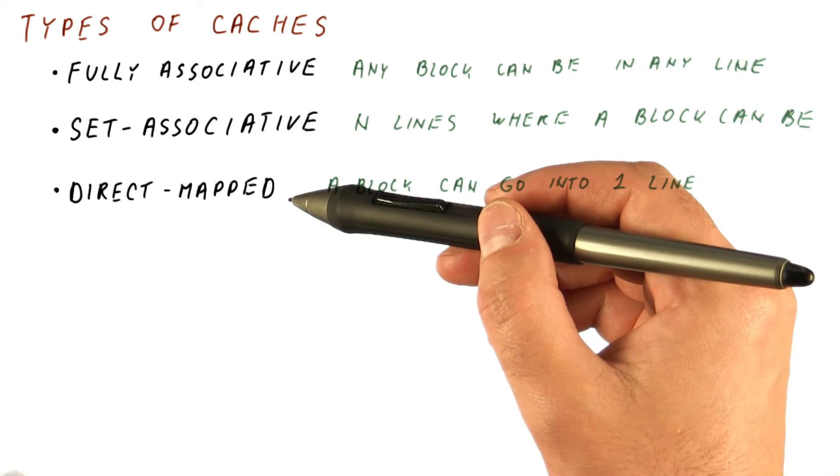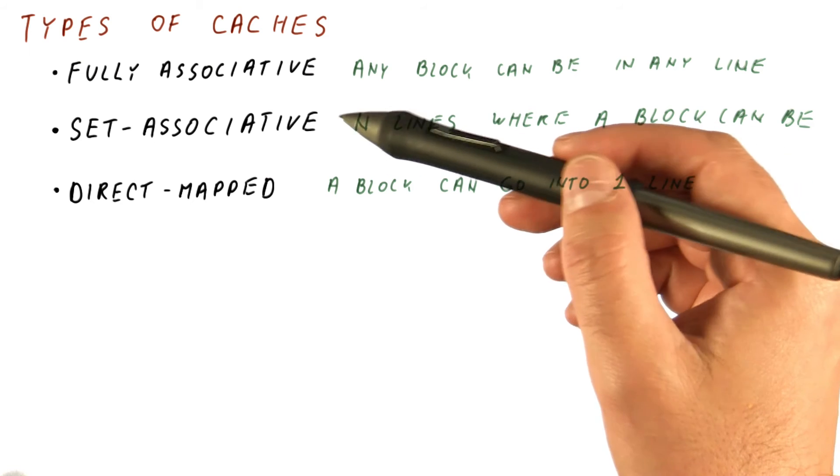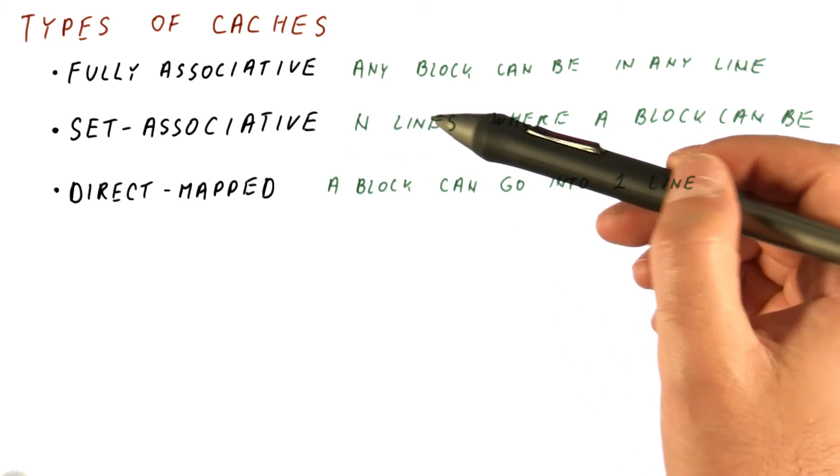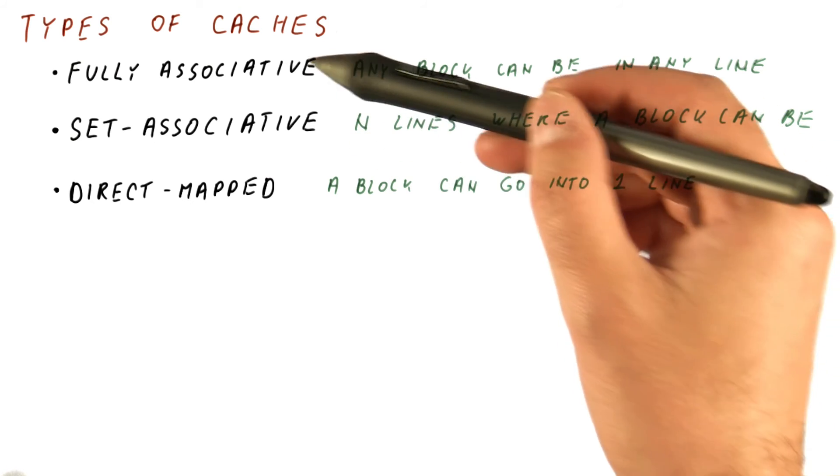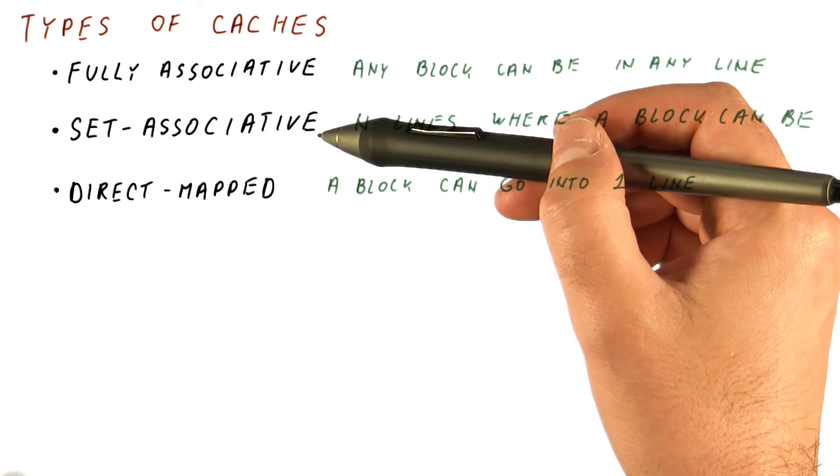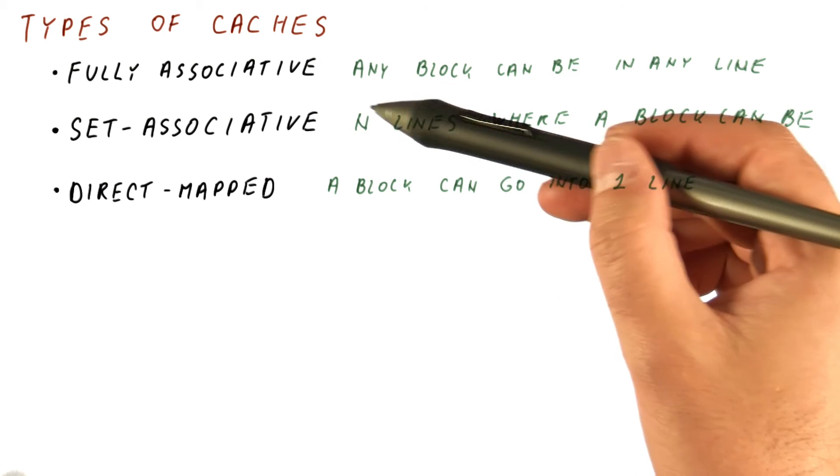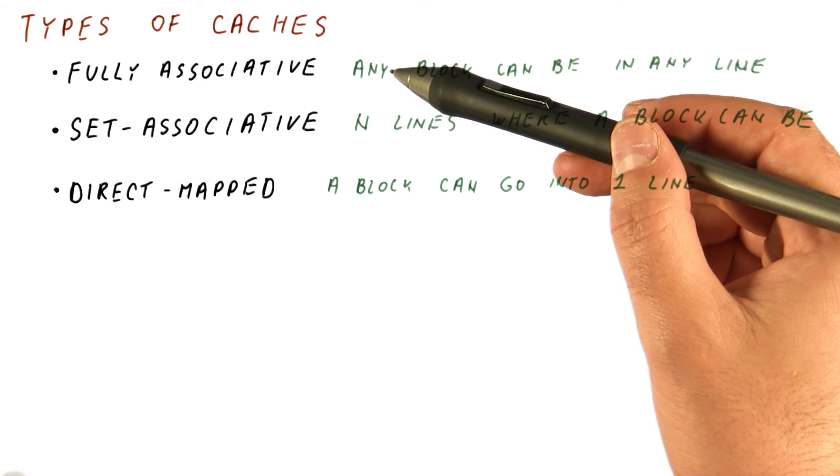So we can view the direct-mapped cache as a case of a set-associative cache where n is one, and the fully associative cache is an extreme case of a set-associative cache where n equals the number of lines in the cache.